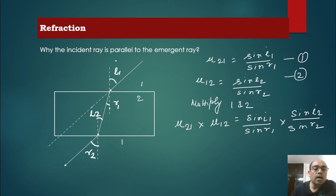Now we know that this r1 and i2 are alternate interior angles, that's why they are same. So their sine function will also be same. So this r1 and i2 are same. So sine i2 and sine r1 are also same. So they will get cancelled.